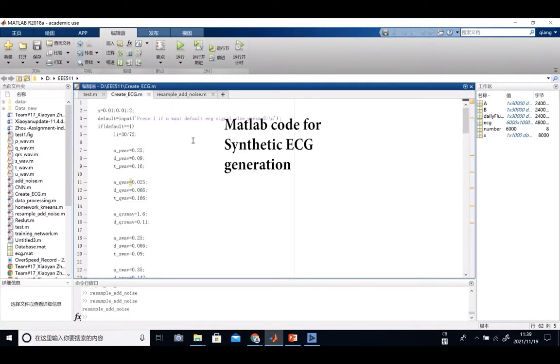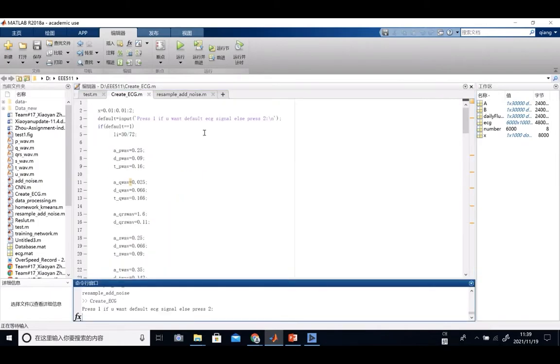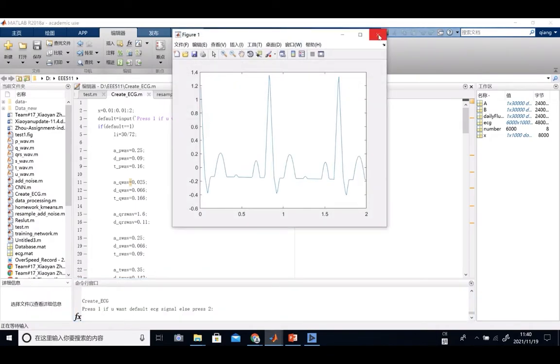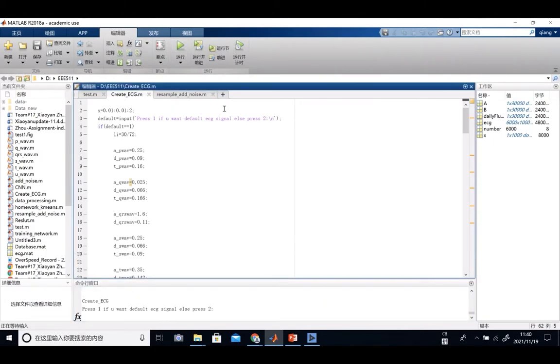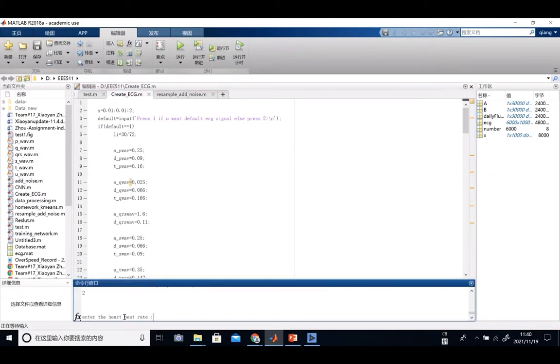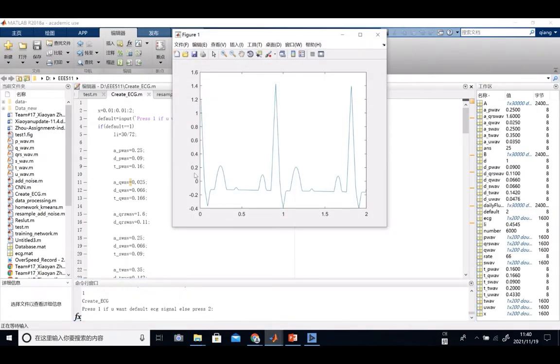This is the MATLAB code we use, we got from the internet to help us simulate some ECG clean signals. If I press 1 here, it will give us a default ECG signal just like this. But we can also choose the heartbeat rate and the amplitude of each of different waves. I have the heart rate at 66 and I will use the default value for each amplitude of the different waves. You can see the frequency of the ECG signal will change.